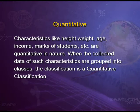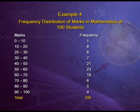The last type is quantitative classification. Here we are talking about quantities that can be measured — for example, characteristics like height, weight, age, income, and marks of students are quantitative in nature. When collected data of such characteristics are grouped into classes, this is known as quantitative classification. For example, in a frequency distribution of marks in mathematics for 100 students, marks are on one axis and frequency on another. Between 0 to 10, there is 1 student who scored such low marks; between 60 to 70, there are 19 students. This kind of classification is known as quantitative classification.